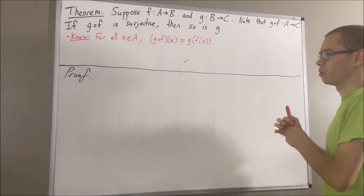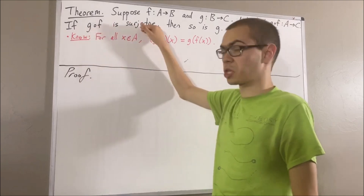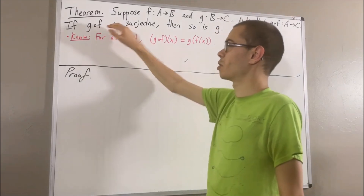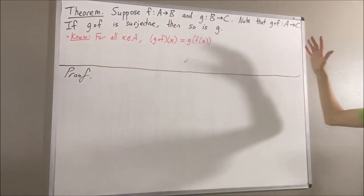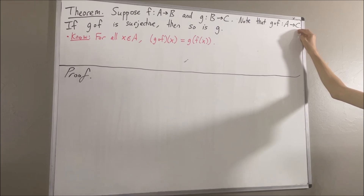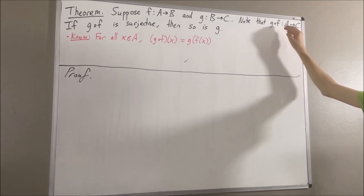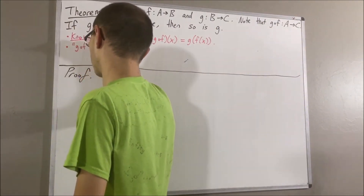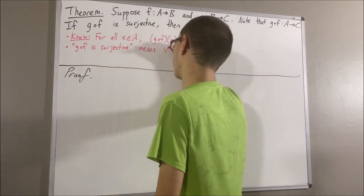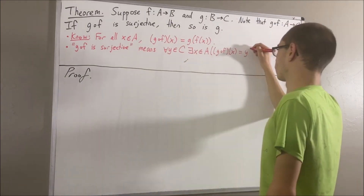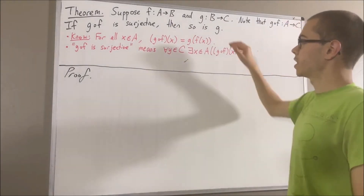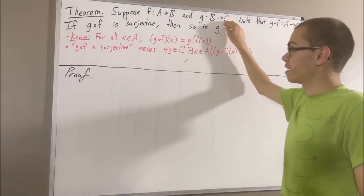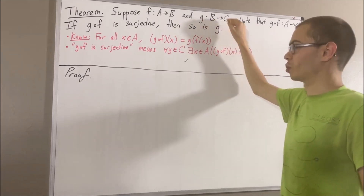Now let's remind ourselves what it means for g compose f to be surjective and what it means for g to be surjective. To say that g compose f is surjective means for all elements y in C, there exists an element x in A such that g compose f evaluated at x is equal to y. Similarly, to say that g is surjective means for all elements y in C, there exists an element x in B such that g of x is equal to y.